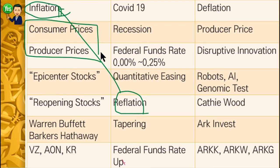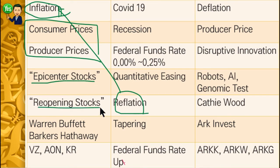Businesses and stores that were hit by the pandemic are going to reopen and make more money again — they hire more people. In terms of stock investment, we call these 'epicenter stocks' or 'reopening stocks.' When you see inflation ahead of us, those stocks are going up and we want to buy them.